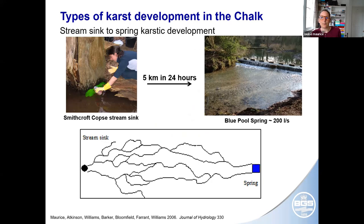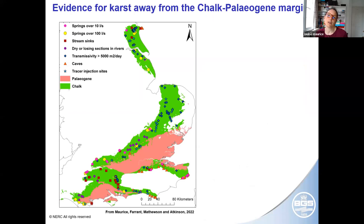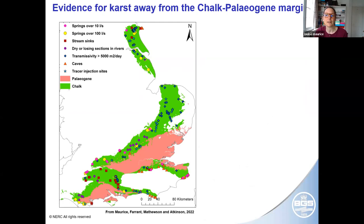We clearly get stream sink to spring karst development in the chalk — there are lots of stream sinks and springs and tracer tests have shown connections between them. I used to think that karst in the chalk was all stream sink to spring karst focused on the chalk–palaeogene margin, and that away from this margin the chalk wasn't really karstic. However, the knowledge exchange data compilation has really shown that there's a lot of evidence for karst away from the margin — even clipping all data to more than five kilometres from the chalk–palaeogene margin, there are large springs, stream sinks, point recharge through riverbeds, high transmissivity, caves, and rapid flow from tracer tests. Solutional networks of conduits and fissures appear to be occurring pretty much everywhere in the chalk.